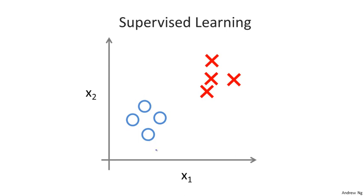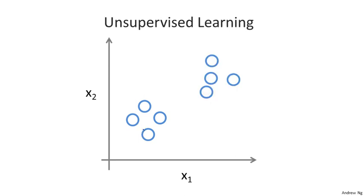In unsupervised learning, we're given data that looks different. We're given data that doesn't have any labels or that all has the same label or really no labels. So we're given the dataset and we're not told what to do with it and we're not told what each data point is. Instead, we're just told, here's a dataset, can you find some structure in the data?